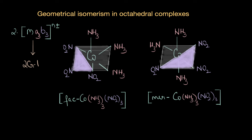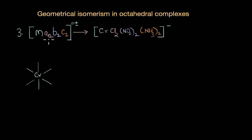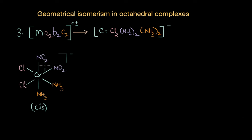Let's look at one last type of octahedral complex: MA₂B₂C₂, which has three different types of ligands a, b, c, each present in pairs. Various cis and trans configurations are possible. Taking the example of a specific chromium complex, in the cis isomer all the ligands are adjacent to each other.